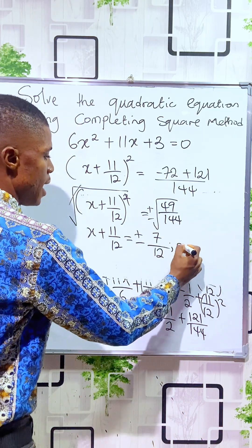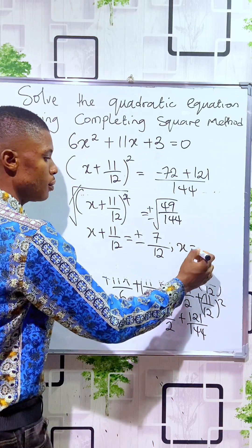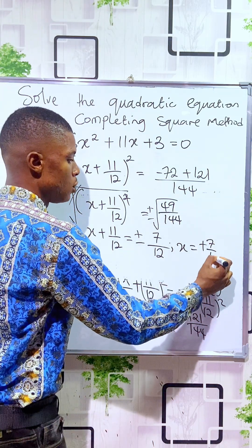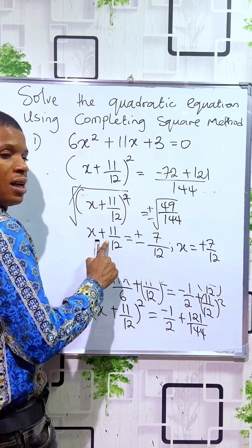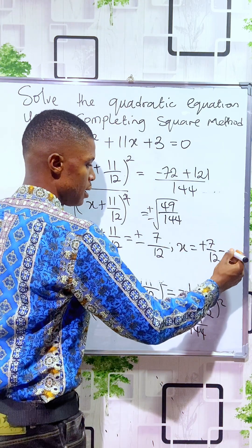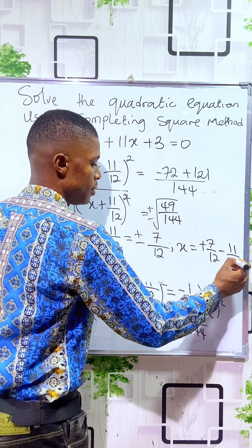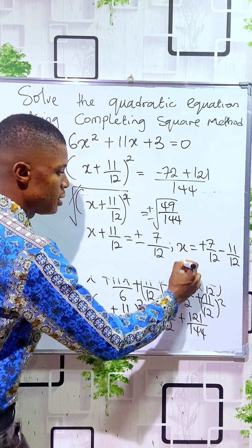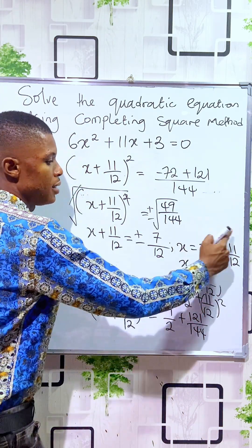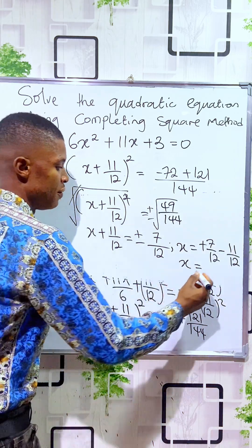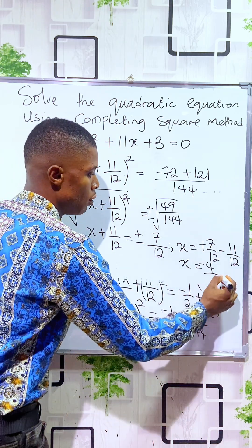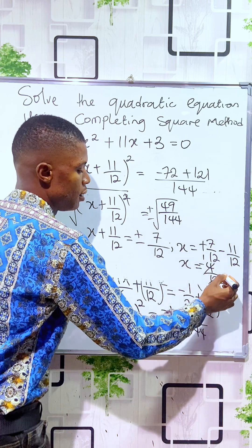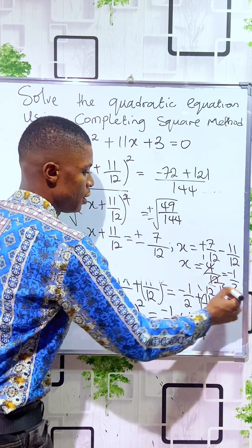For the positive solution: x equals positive 7/12, and 11/12 crosses to the other side to become minus 11/12. So x equals 7/12 minus 11/12, which gives minus 4/12. Simplifying, 4 divides by 4 to give 1 in the numerator and 3 in the denominator, so x equals minus 1/3.